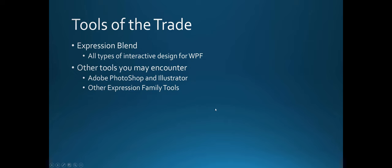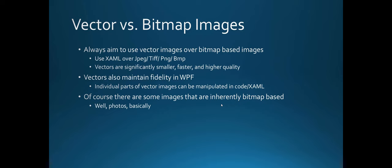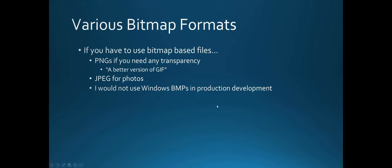Tools of the trade include Expression Blend and Photoshop. Expression Blend is a little better than Visual Studio when dealing with UI elements, especially animations — I have another lecture on it if you want to go through that. For images: vectors are defined by paths, so they're fast, high quality, and can grow or shrink without losing resolution unlike bitmaps. I'd recommend using vector graphics where possible. For formats: use PNG if you need transparency, and JPEG for photos.